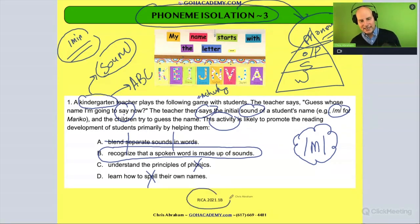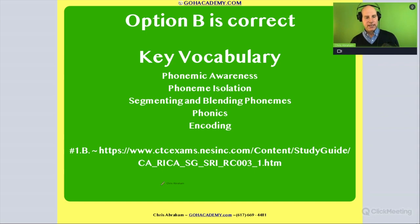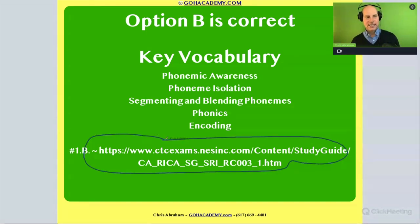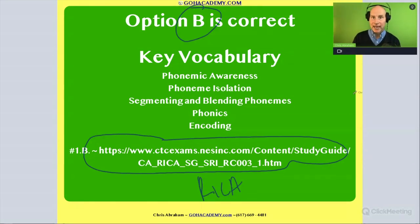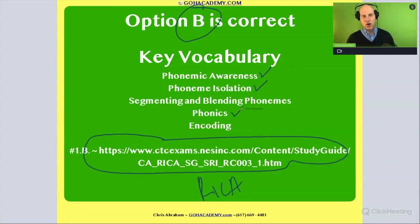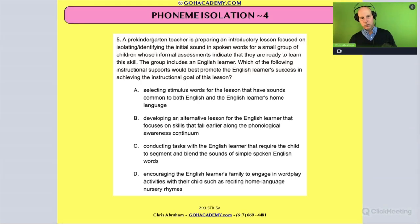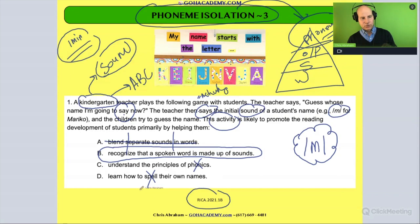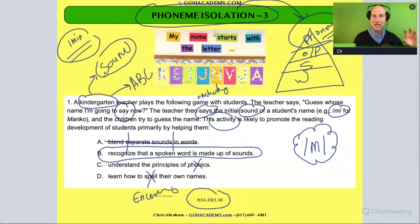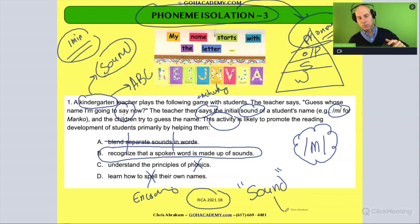These are great practice questions. This is a great test to take a look at — it's from the California exam, the RICA. Really great to review. The answer here is B. Look at some of the vocab we came across: phonemic awareness, phoneme isolation, segmenting and blending phonemes — which we'll do in a bit, as that's the next level of phonemic awareness — and phonics. Anything involving spelling, like learning how to spell their own name, is encoding. Encoding is when we take sounds and match them up with their spelling patterns.